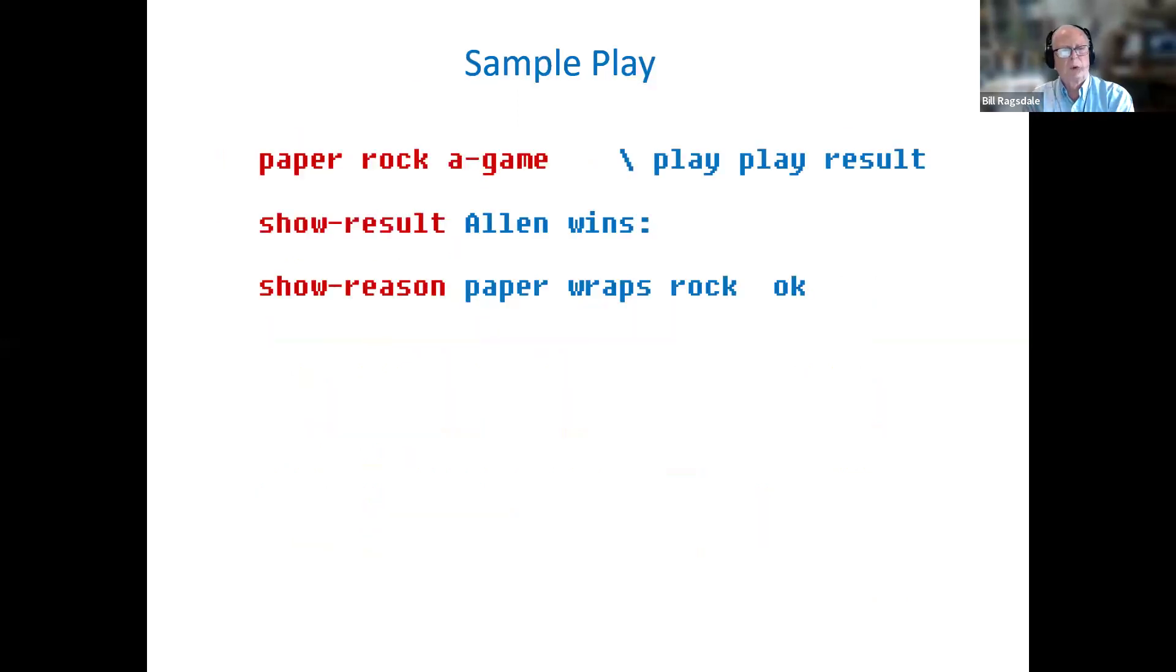This is a sample play. The red is what would be typed at the console. Alan types in paper. Betty types in rock. We execute a game, and that generates the game result in the matrix that we saw. We'll execute show result from the console, and we'll get a report that said Alan wins. And then we show the reason, and it will say paper wraps rock. And that's one example of playing.